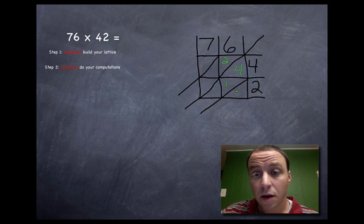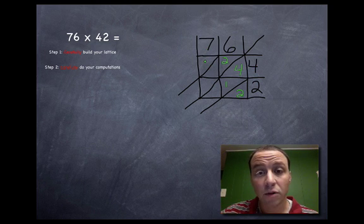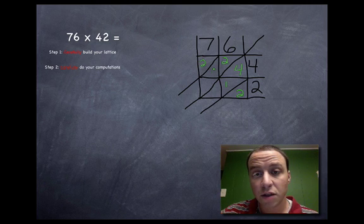What's six times two? Twelve. So you put the tens place up top and the ones place on the bottom. Let's do it again over here for seven times four. Seven times four is twenty-eight: two in the tens place, eight in the ones place. And finally, seven times two is fourteen.